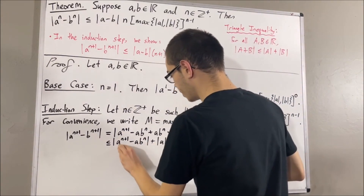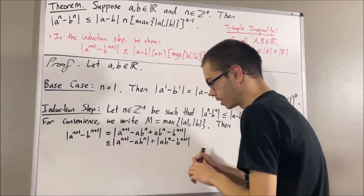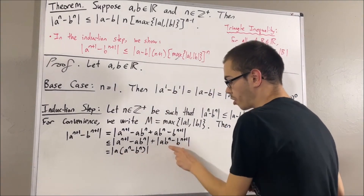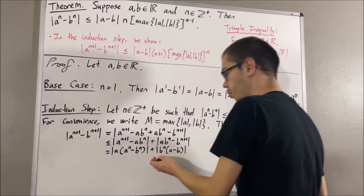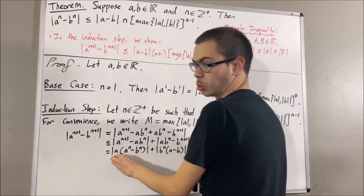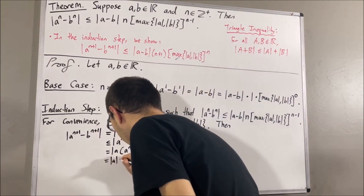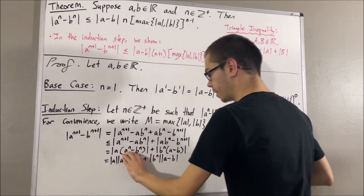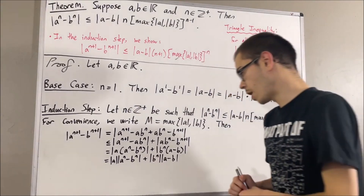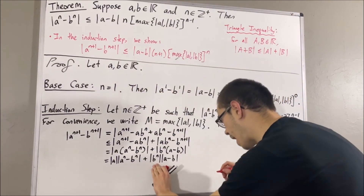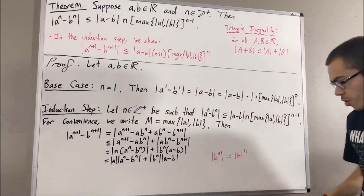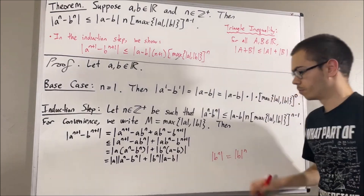In these two terms we're going to factor out an a, and for the other two terms we're going to factor out b to the n. Recall that the absolute value of a product is equal to the product of absolute values. And another property of absolute values tells us that the absolute value of b to the n is equal to the absolute value of b, to the n — so we can move the n outside the absolute value.